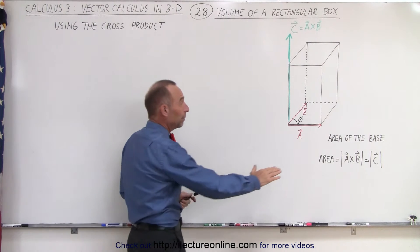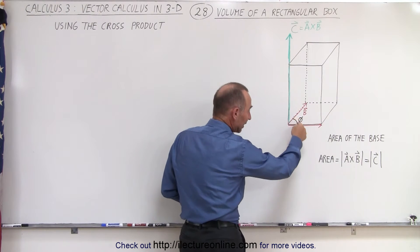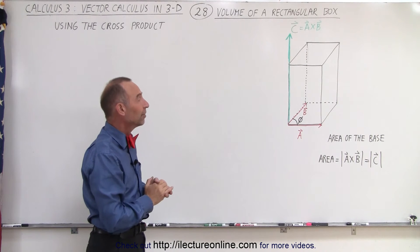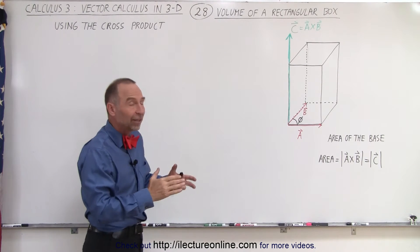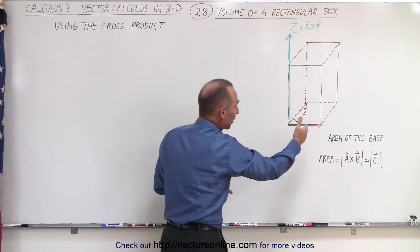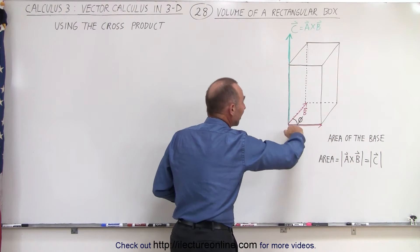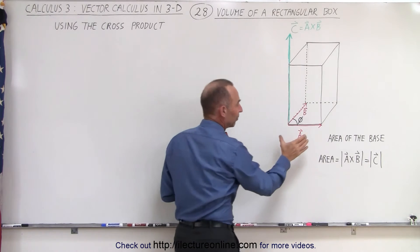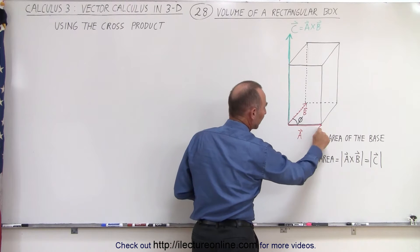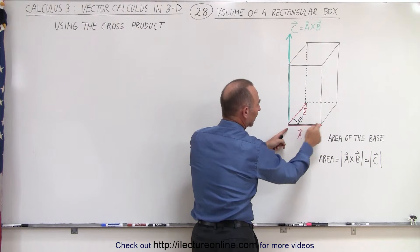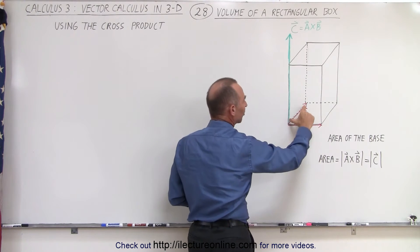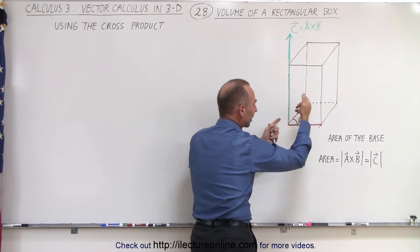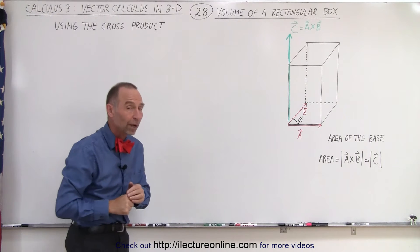A rectangular box will have a square base. Even though I put the angle in there and called it phi, let's assume for the moment that that angle is 90 degrees. The volume of a rectangular box would be equal to the area of the base times the height. I've defined a vector A to be the length of one side directed from left to right, and a vector B the length of the other side. So the length of B is equal to the length of that side as well.